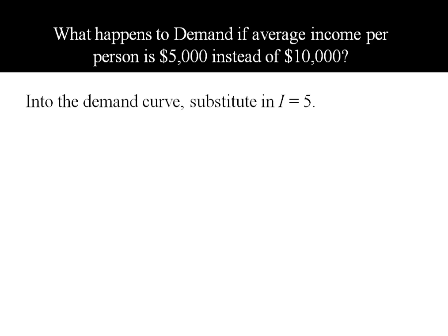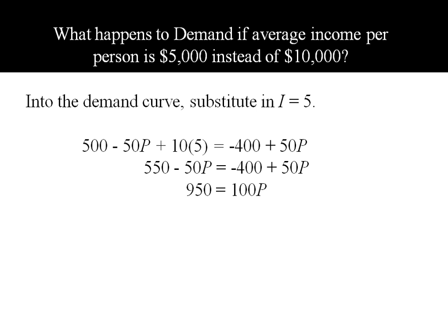Into our demand curve we'll substitute I = 5. We find that this substitution means price falls from $10 per kilogram to $9.50 per kilogram.